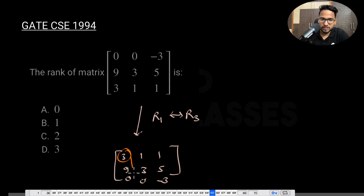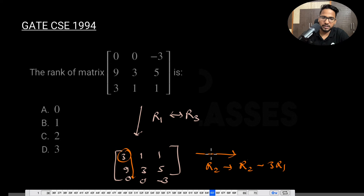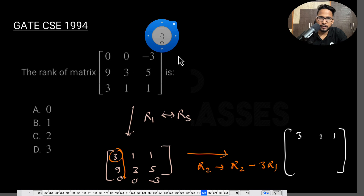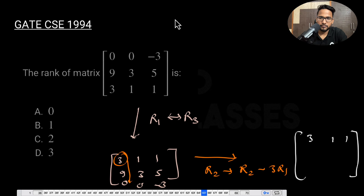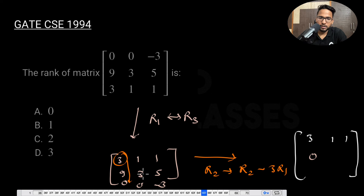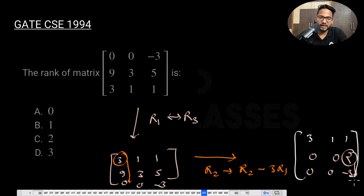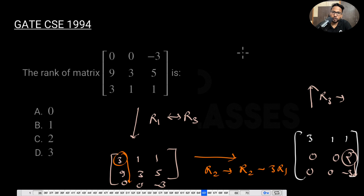Now make the elements below the first pivot zero. Apply R2 = R2 - 3R1. Row 1 stays as 3 1 1. For row 2: the first element becomes 0, 9-9 = 0, 3-3 = 0, 5-3 = 2, and the last entry becomes 0 - 3. Then make the remaining element in that column zero by replacing R3 appropriately. Ultimately you will have two non-zero rows: 3 1 1, and 0 0 2, and then 0 0 0.